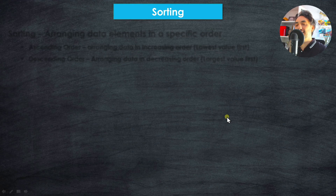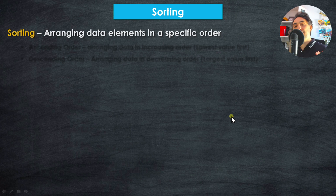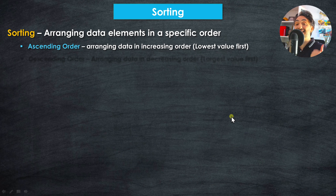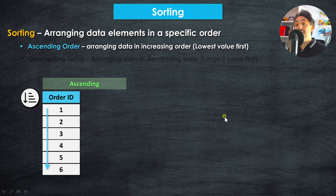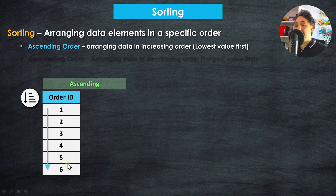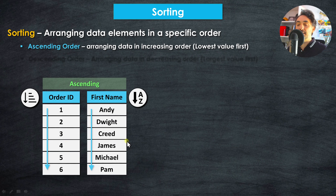Sorting is arranging your data in a specific order. We have two options: ascending order, where we arrange data in increasing order — starting with the lowest and moving to the highest. For example, with an order ID sorted ascending, values would go one, two, three, four, five, six. For text like first names, it goes from A to Z — for example, Andy, Dwight, ending with Pam.